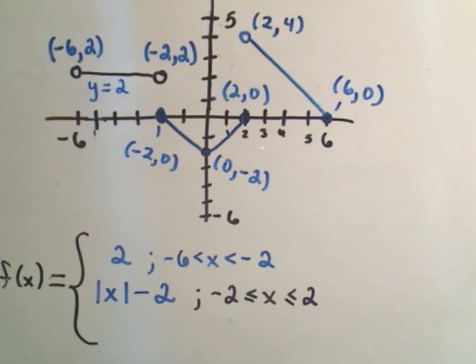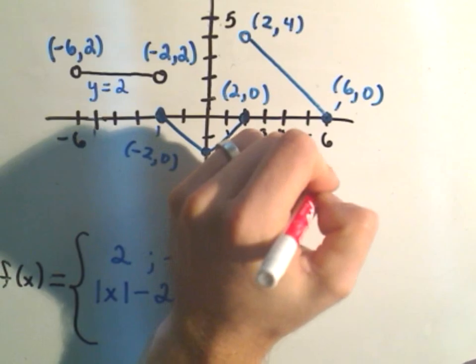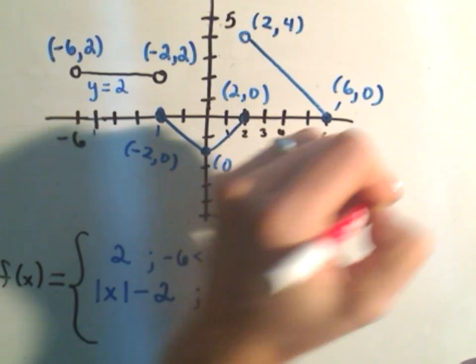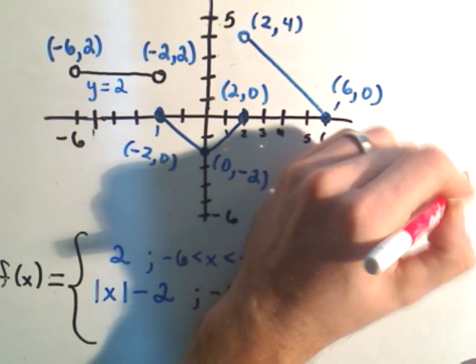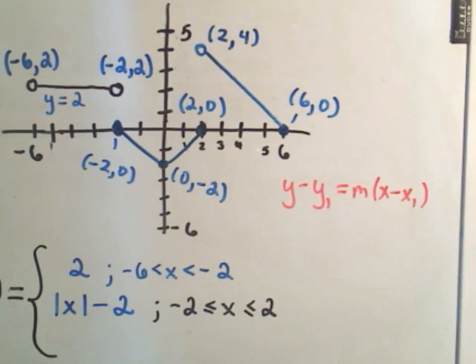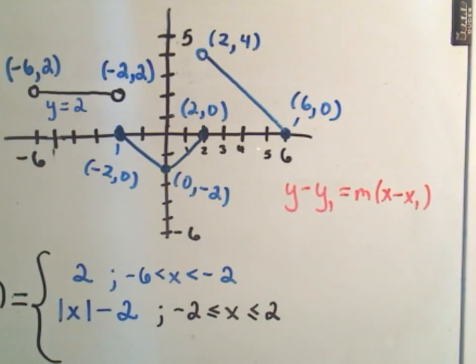So remember the equation of a line. We can use point-slope formula. And point-slope formula says we take y minus y₁ equals the slope times x minus x₁. And I can pick either one of these points to fill into this. Okay, well first off, I have to figure out my slope.